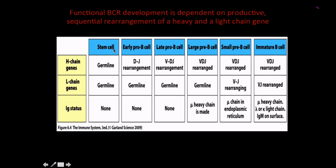We start off as a stem cell with the germline configuration, and then in the earliest pro-B cell stages we're going to have D and J rearrangement. We do this first because this is the hardest thing for B-cells to do. After that we have late pro-B cell progression, where V and DJ come together to combine—all of this just happening in the heavy chain.